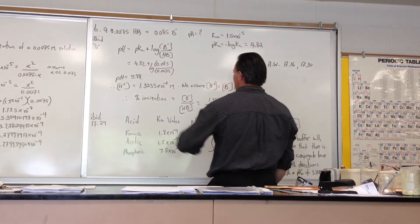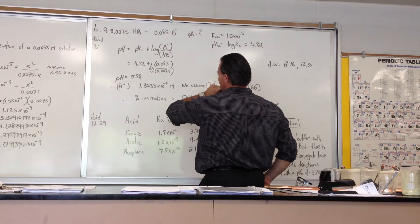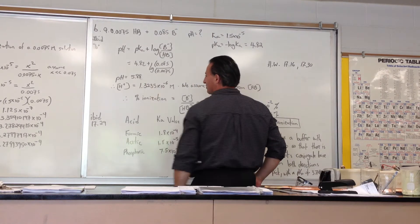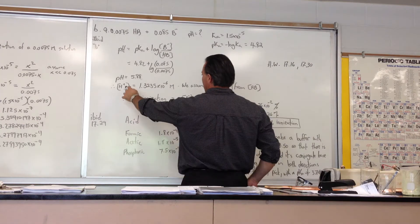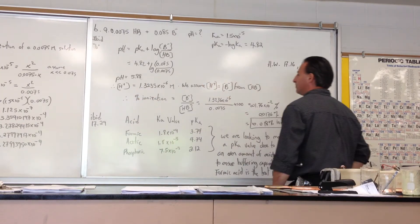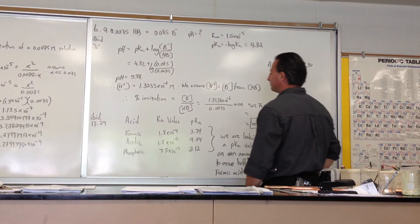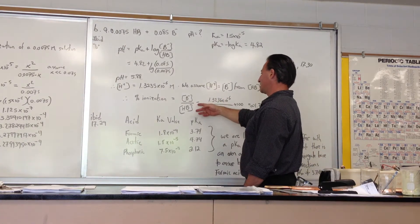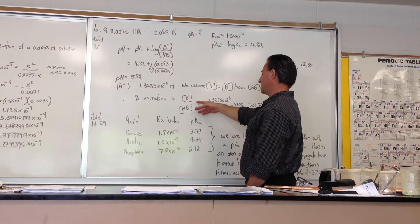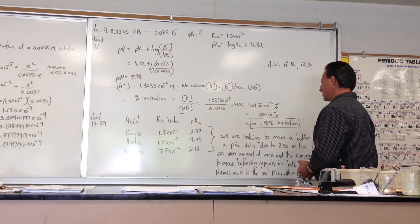So we did that, we used the Henderson-Hasselbalch equation, we plugged in the concentrations that they give us in the problem, and we get that the pH is equal to 5.88, from which we find out that the proton concentration is 1.3 times 10 to the minus 6. We then do the percent ionization calculation, and we find out that it's only 0.018% ionized.